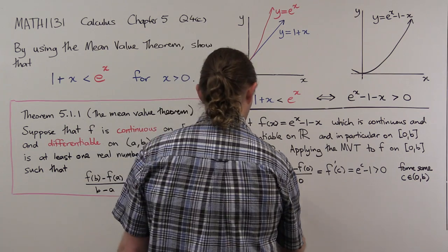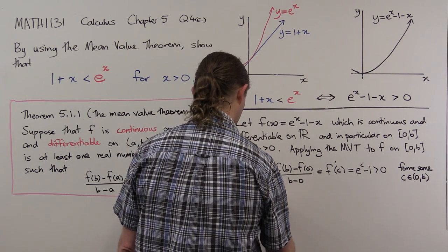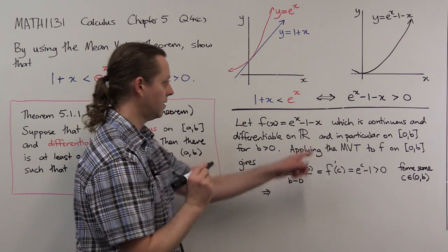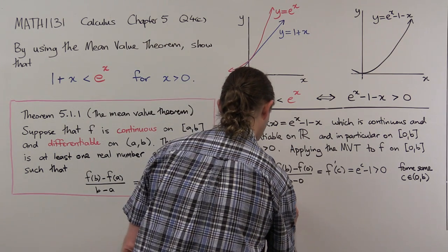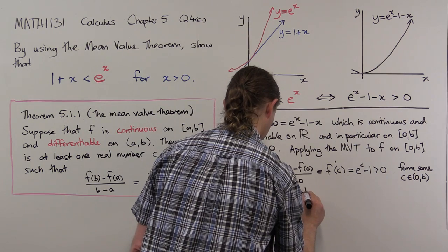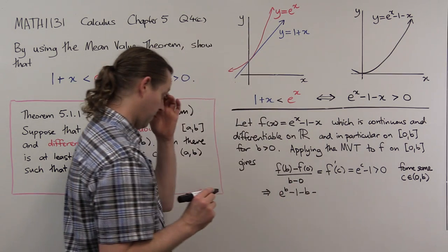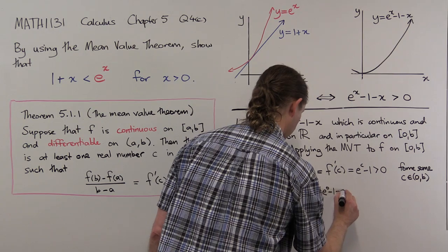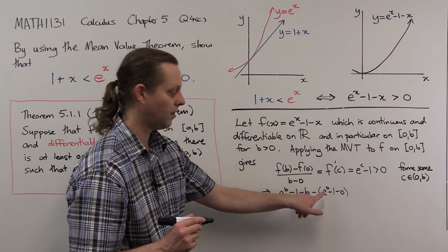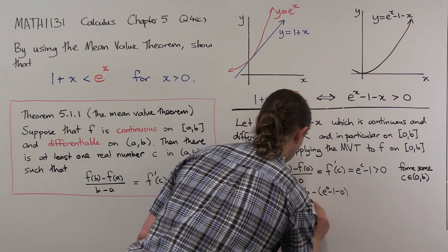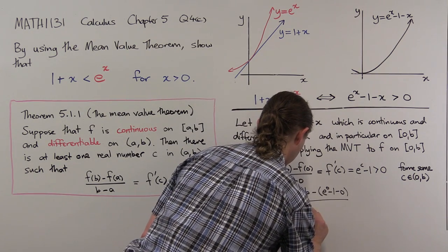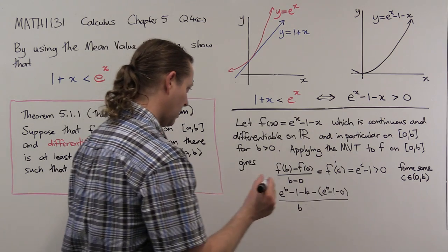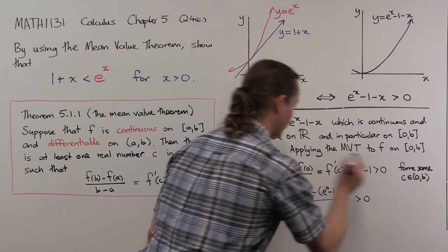Let's simplify the expression on the left. f of b equals e to the b minus 1 minus b, and f of 0 equals e to the 0 minus 1 minus 0, which is 0, since e to the 0 is 1. So we have e to the b minus 1 minus b, all over b, which is greater than 0.